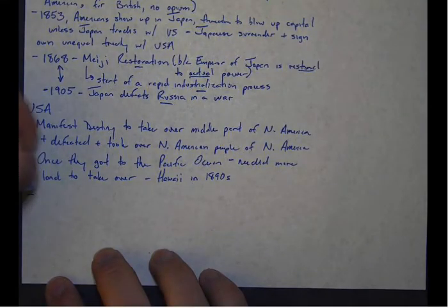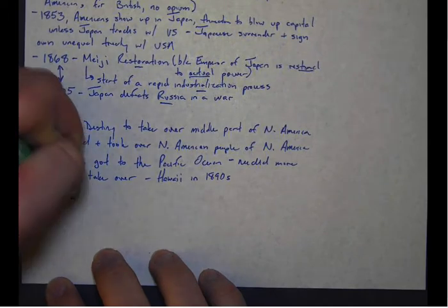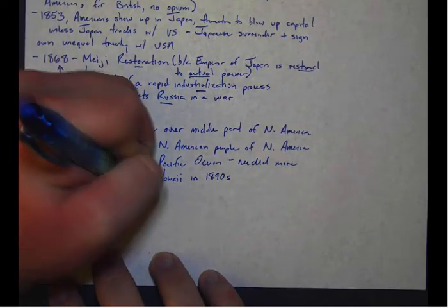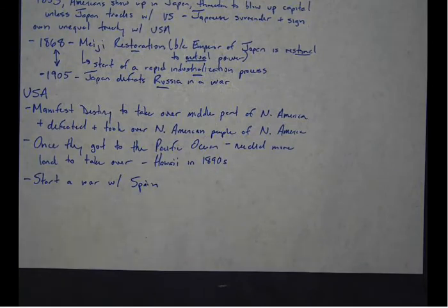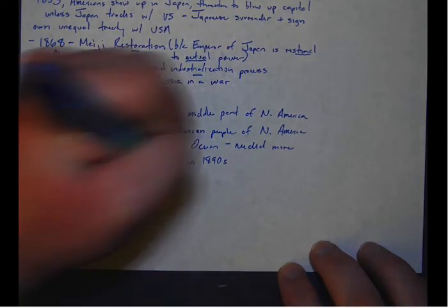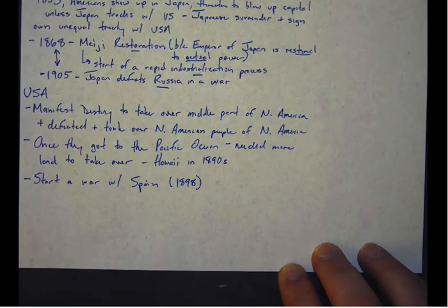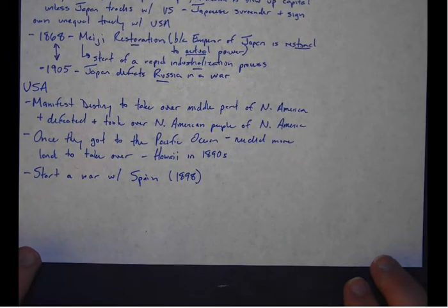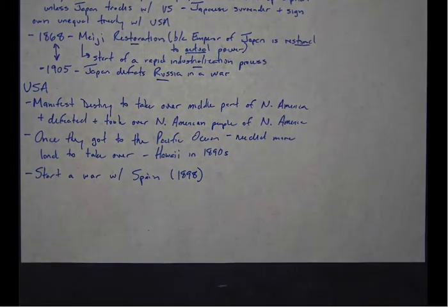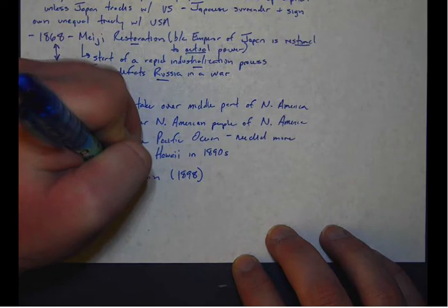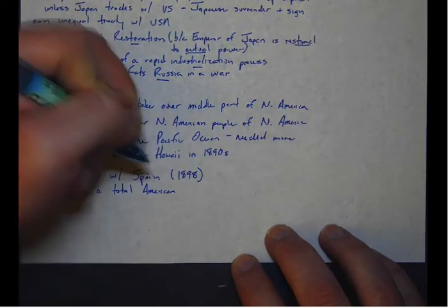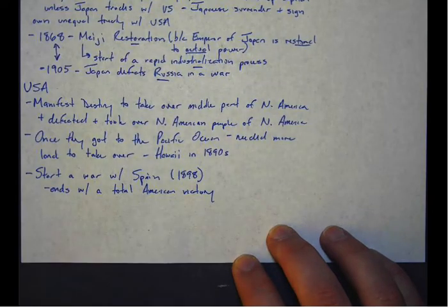And there is an aging, decrepit empire that they can take advantage of. And they're going to start a war with Spain. Oh, how the mighty have fallen. So Spain, which once controlled about half of the planet, is now going to go to war with the United States and get their butts kicked. So the United States starts this war with Spain in 1898. You don't need to worry about why the war starts. But essentially, the war ends with a total American victory.